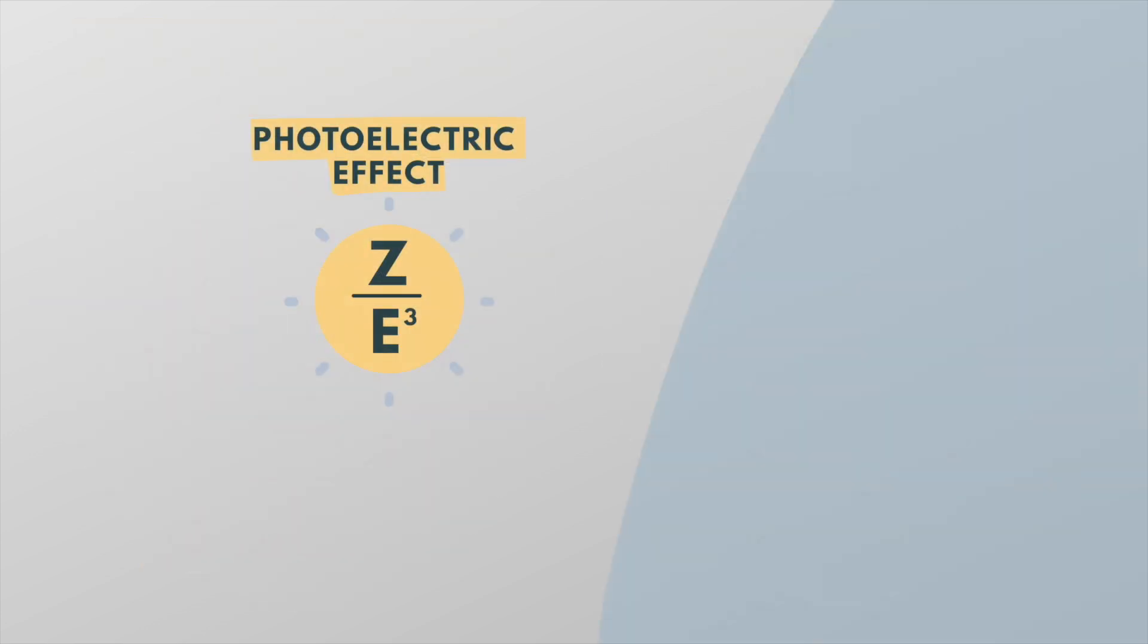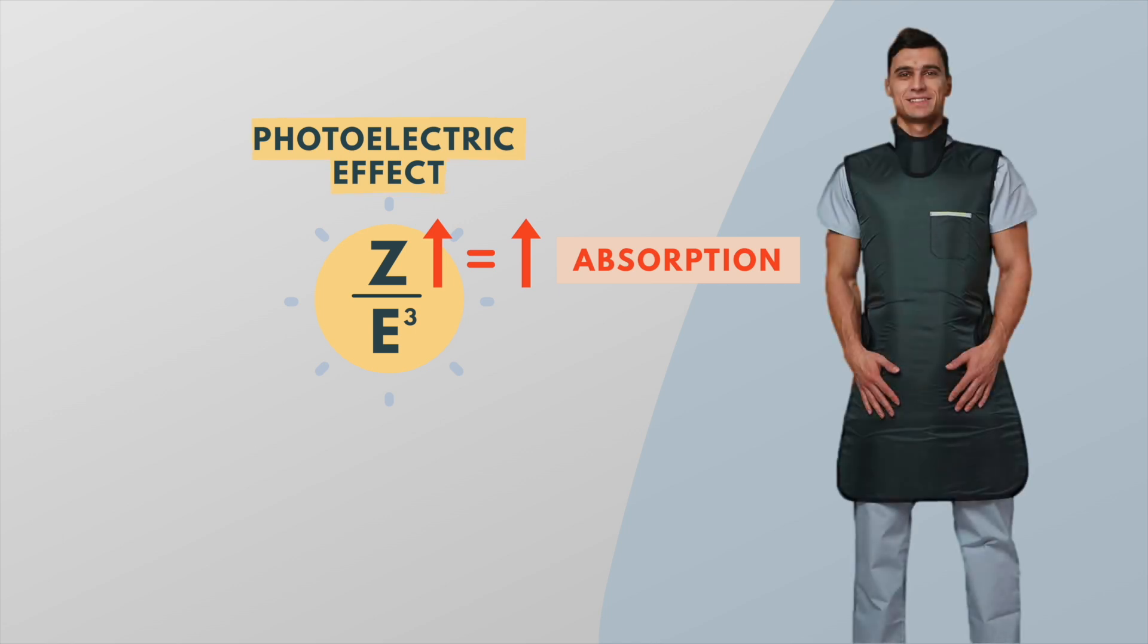The likelihood of photoelectric absorption increases with the atomic number and decreases with increasing photon energy. Therefore, as the atomic number increases, the photoelectric absorption becomes more pronounced. This is why materials such as lead are widely used for shielding gamma and x-rays.